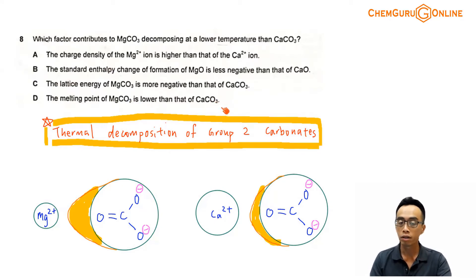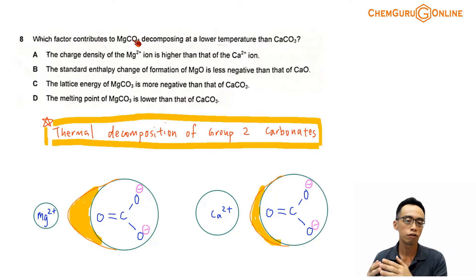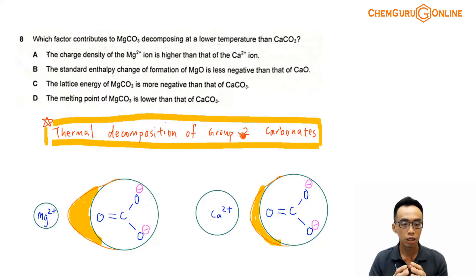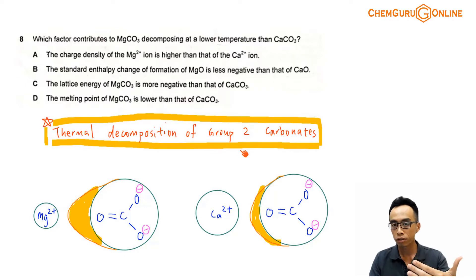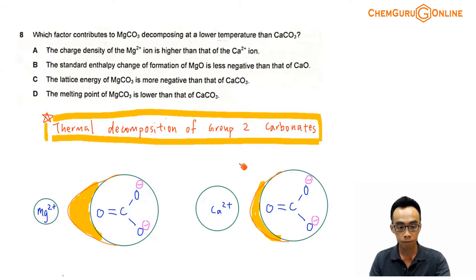The topic tested in this question is actually fairly straightforward, involving the decomposition temperature of MgCO3 and CaCO3. This is actually under group 2, and the concept is focusing on the thermal decomposition of group 2 carbonates. So let us just run through the concept first, in order for us to understand which is the answer.